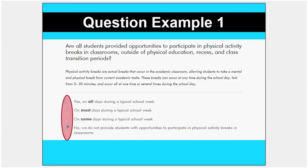If you have trouble deciding between different answer choices, we recommend selecting the lower level — you can always go back and update the assessment. For right now, just make sure to answer each question. The four selections for each question allow your school to see improvement over time, and we recommend updating your assessment a couple of times each year to celebrate the progress you're making toward a more active school environment.